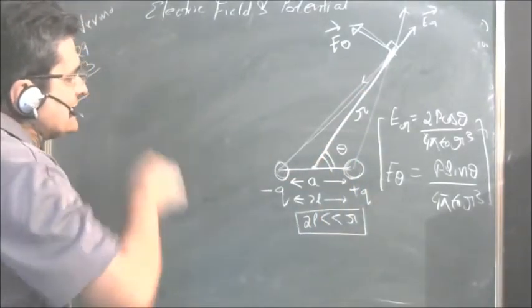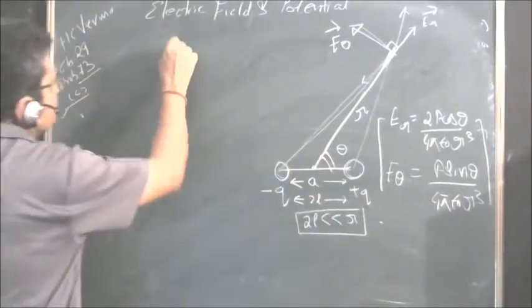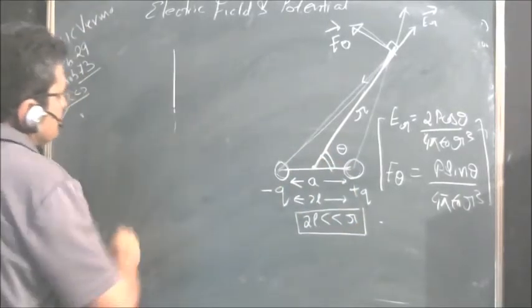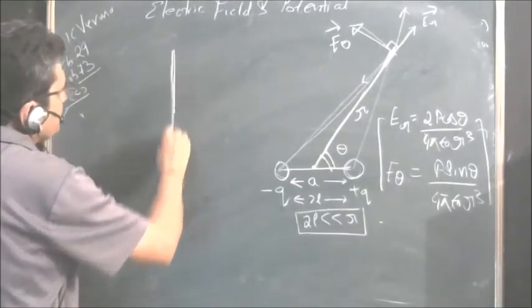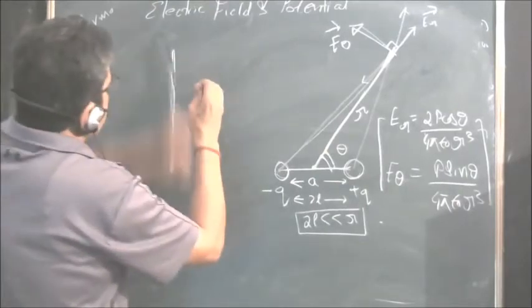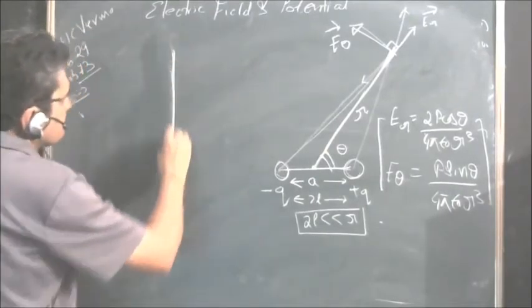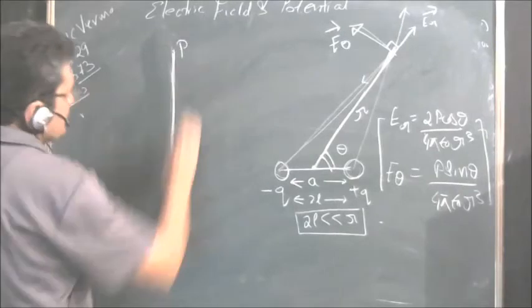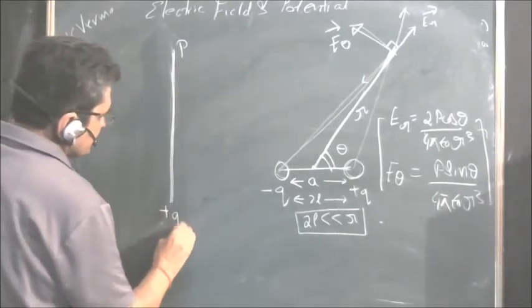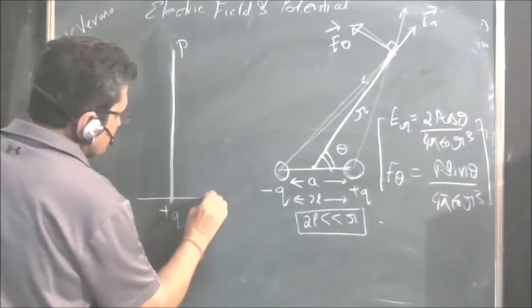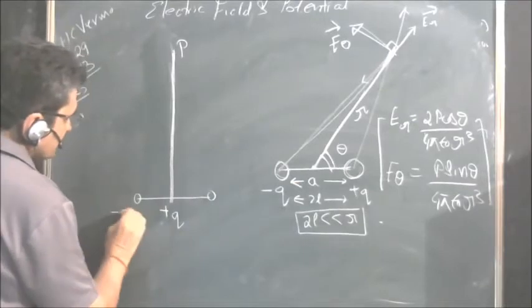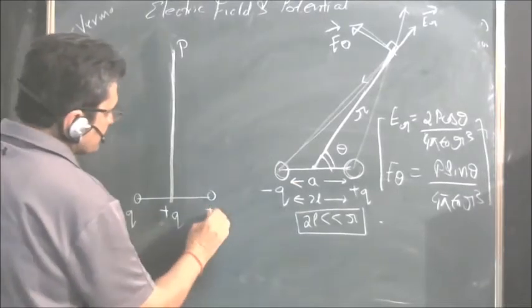Now the case which is given to us is like this: there is a point P, there is a positive charge here, and then there are also charges here, minus Q and plus Q.